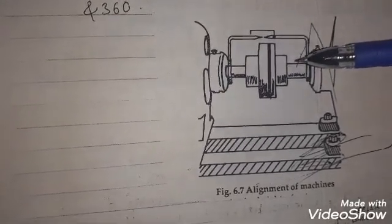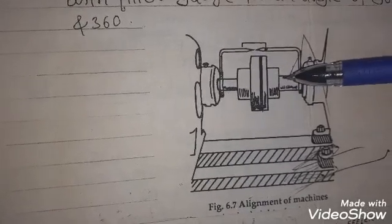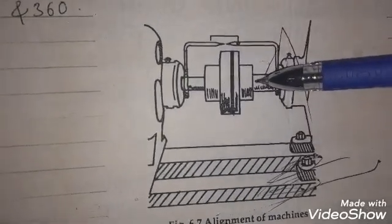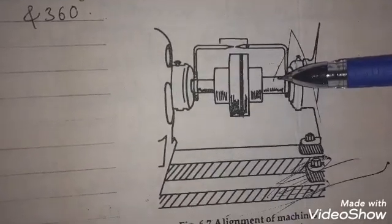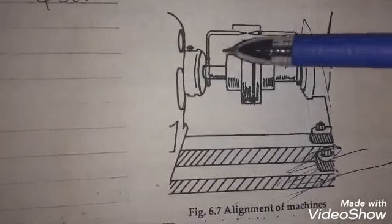These two machines are already placed on foundations. The machines here are directly coupled, that is, they are having the coupling arrangement for mechanical power transmission. Whether these shafts are properly aligned or not, that we have to check now.